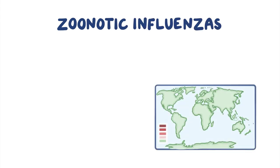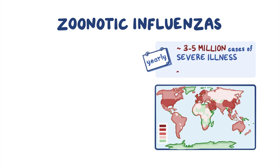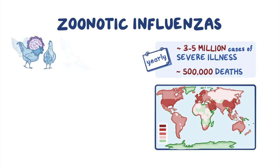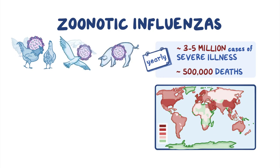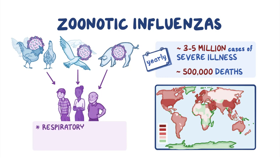Zoonotic influenzas spread around the world in yearly outbreaks, resulting in about 3 to 5 million cases of severe illness and approximately half a million deaths. Zoonotic means they are caused by pathogens — in this case viruses — that have hopped from infected animals to humans. They've been found in animals like domestic poultry, wild birds, and pigs. In humans, they typically cause mild to severe respiratory symptoms and fever, and they have the potential to cause epidemics or pandemics.